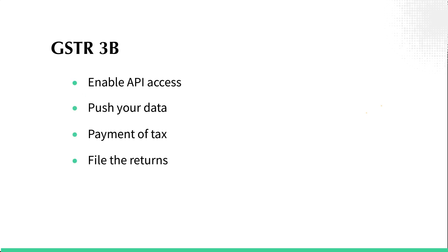The process of filing GSTR3B involves the following steps: enabling API access in the GST portal and answering filing related questions, pushing your data from Zoho Books, payment of tax, and filing your returns in the GST portal.